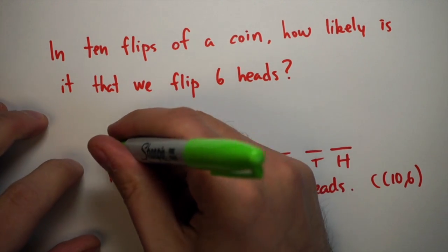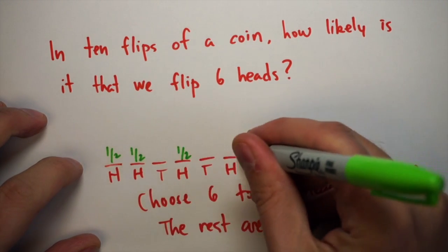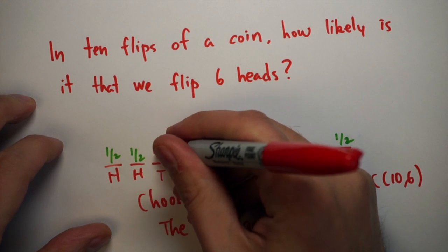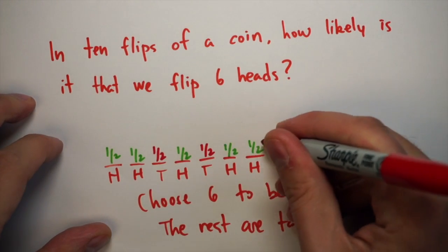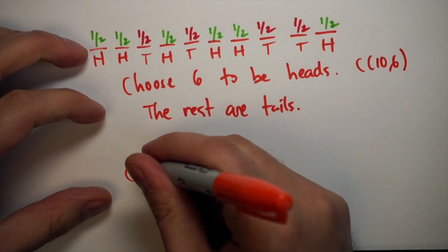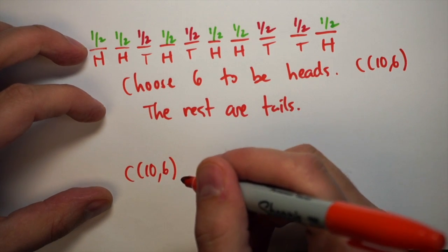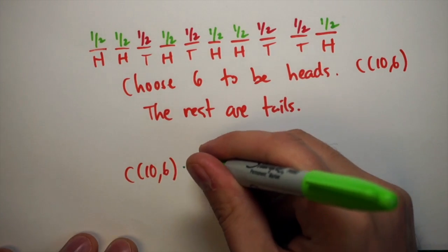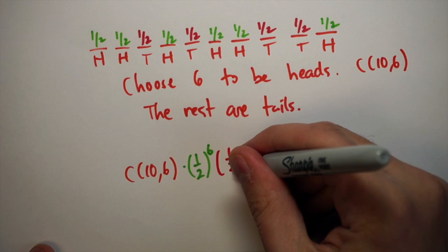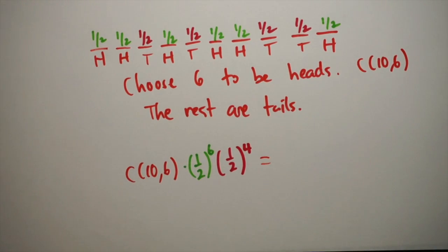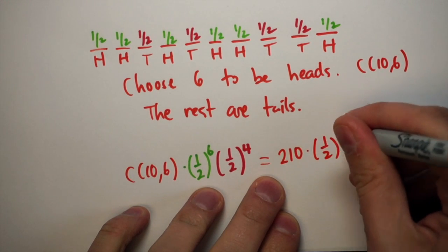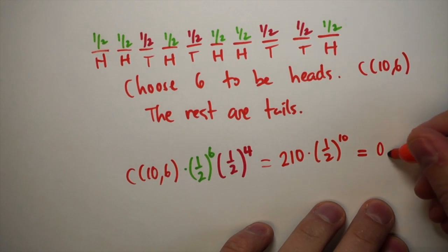Now we know which ones are heads and which are tails because we've chosen them. We need to fill out the probabilities: each head has a one in two chance, and each tail also has a one in two chance. Using the multiplication principle, since all events are independent, the full probability is C(10,6) times one-half to the sixth times one-half to the fourth. Putting these together: C(10,6) is 210, and one-half to the tenth power gives a decimal of about 0.205.